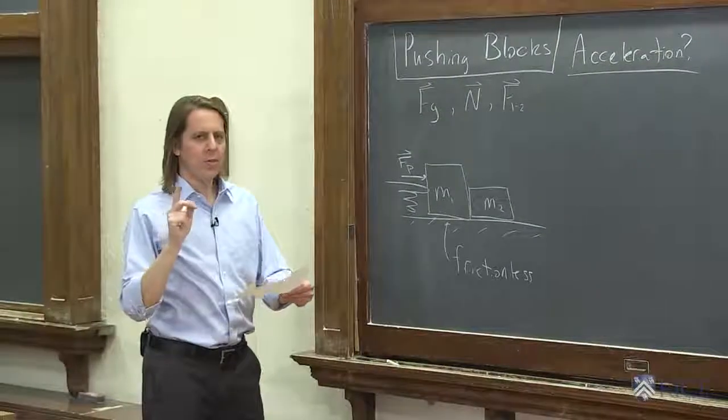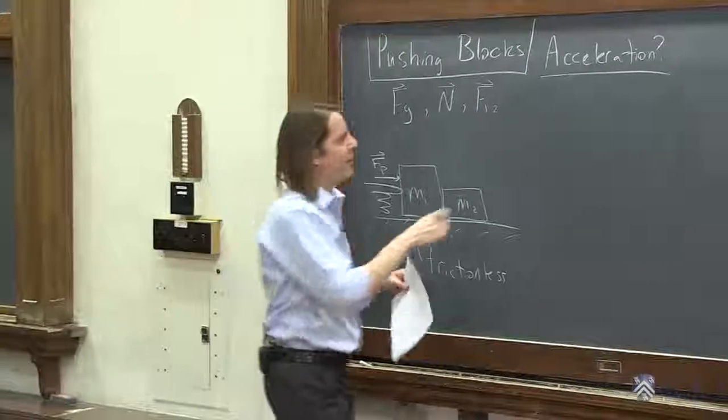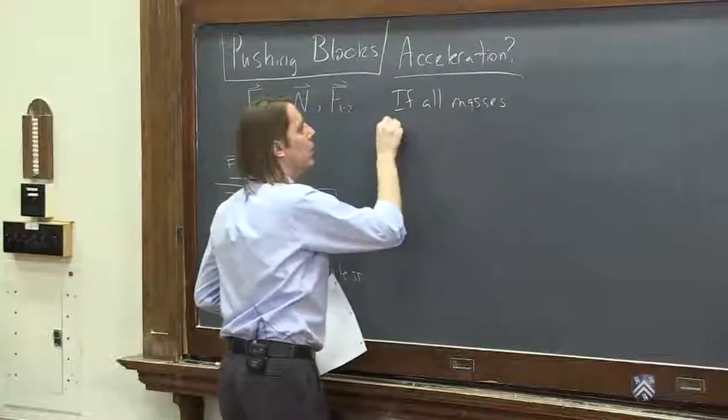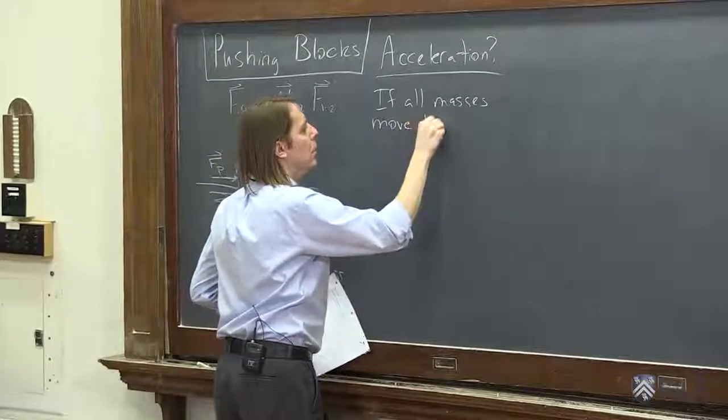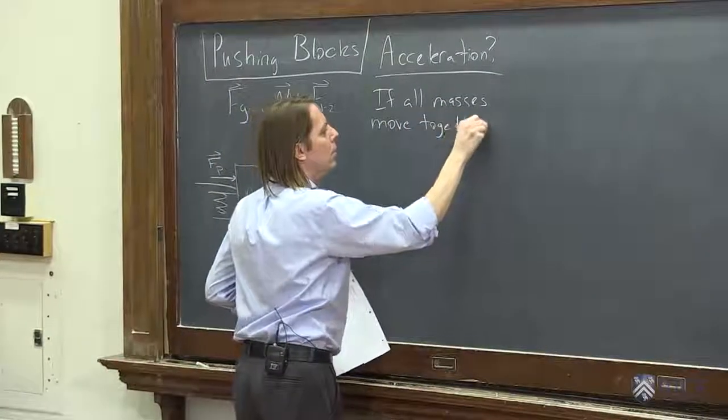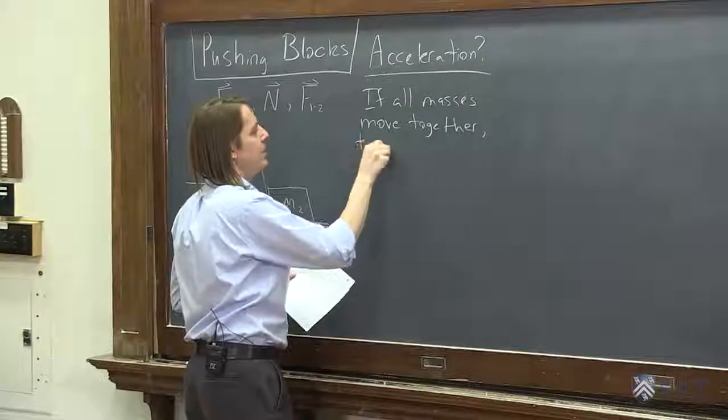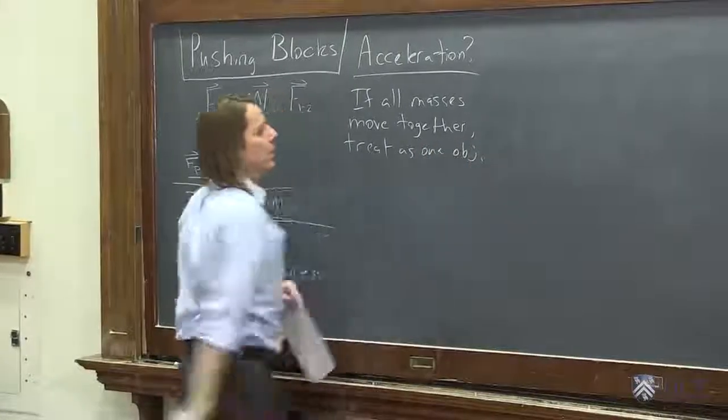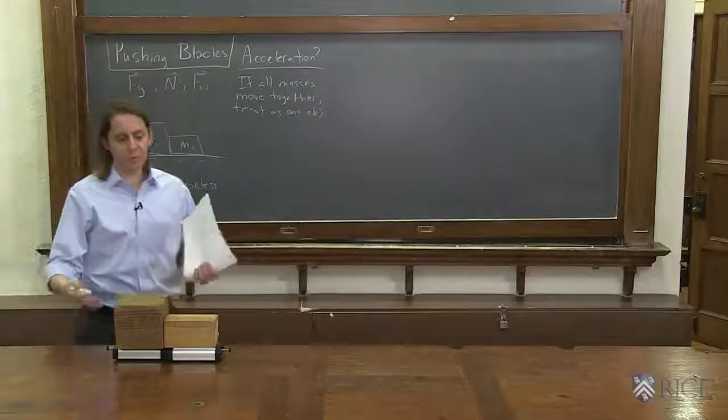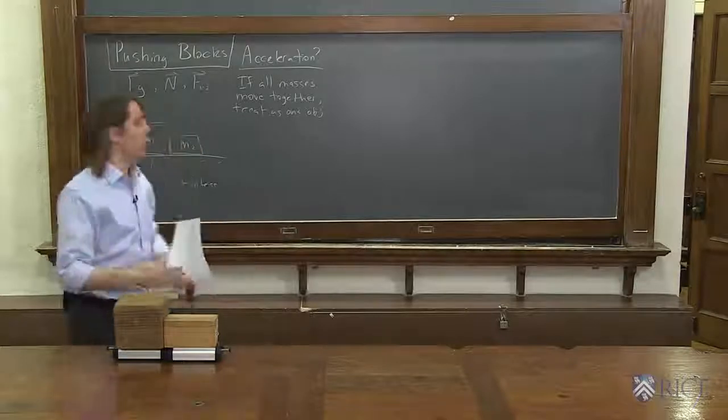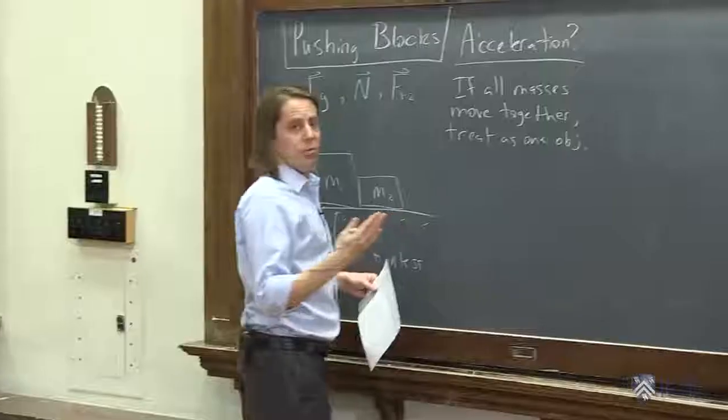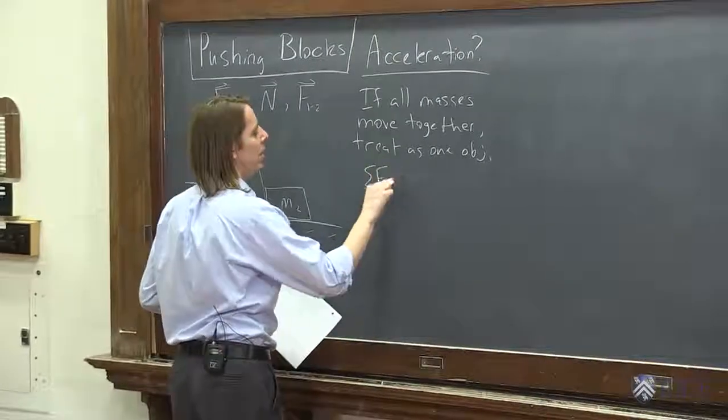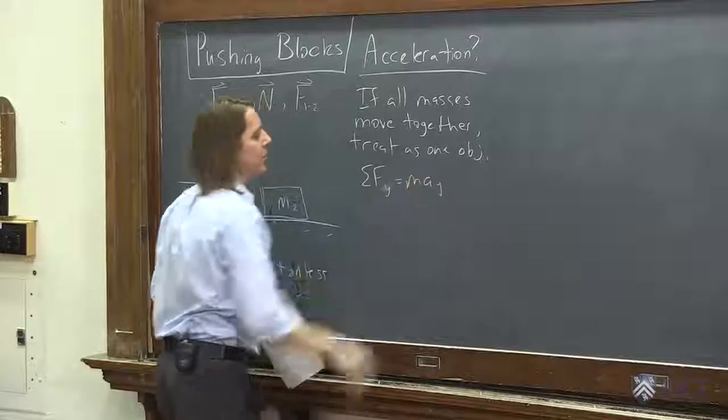Acceleration, so here's a tip on solving problems like this. If all the masses move together, then what you can do is you can treat it as one object. So instead of thinking of it as mass one and mass two, we'll just think of it as a total M1 plus M2. And we can apply Newton's second law in the y.